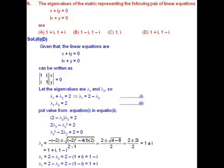The eigenvalues of the matrix representing the following pair of linear equations: x plus iota y equals 0 and iota x plus y equals 0 are.